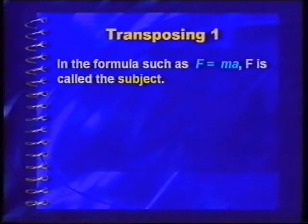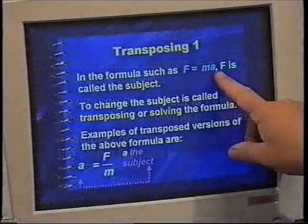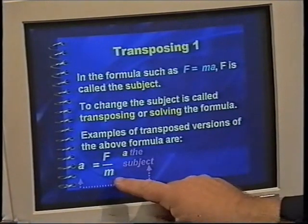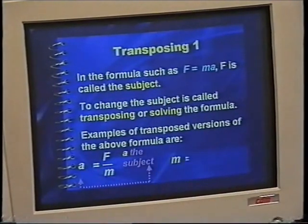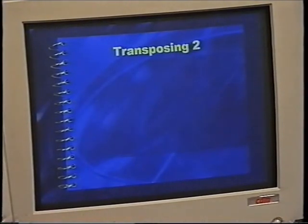Now what we frequently have to do when we have formula is to transpose the formula, to rewrite the formula in a different format. If I want to program a calculator or a computer I would have to do that, so we have to be well trained in that. Let's have a look. Transposing, that's what it is called. In transposing what we do is we change the subject. In a formula such as f equals m times a, we actually call f the subject. It is the letter that's on its own if you want and to make another letter the subject you transpose or you solve the formula. So for instance if I have f equals m times a, I could write it as a equals f divided by m, and now a is the subject, or I could write it as m equals f divided by a.